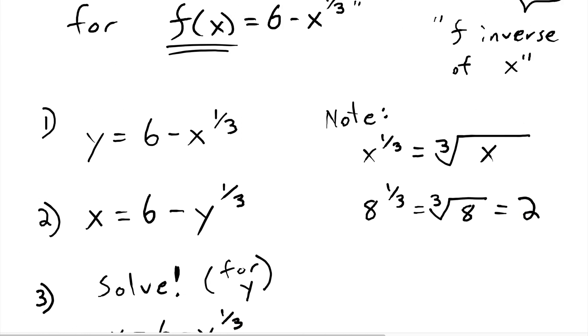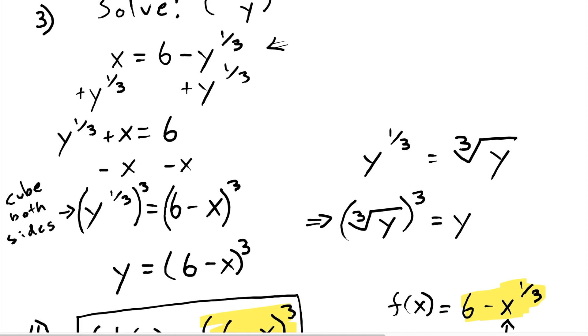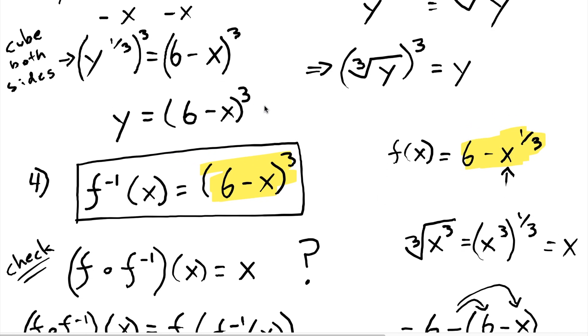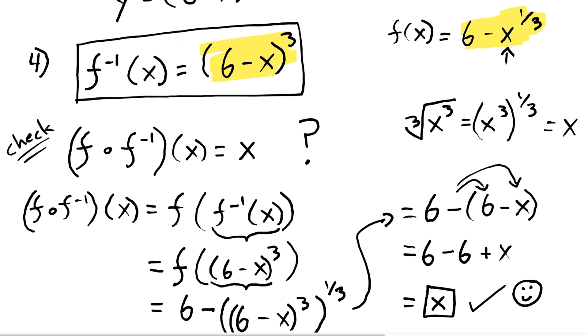So, just as a refresher, what did we do? We replaced f of x with y. We switched x and y. We solved for y. And then, once we had solved for y, we just replaced y with f inverse of x, with the symbols f inverse of x. And then, all this last part was doing was checking to make sure that the answer we got here was actually the inverse of our original function. And we went through that composition of functions and determined that, yes, we do end up back where we started. So, we had the right answer, and that made us happy.